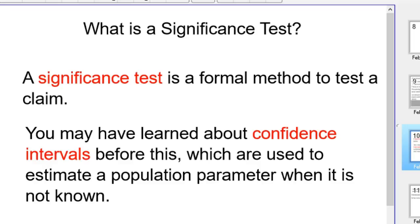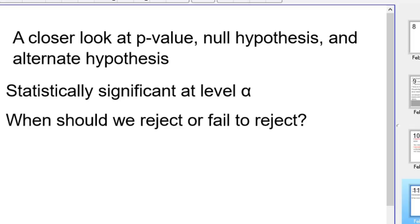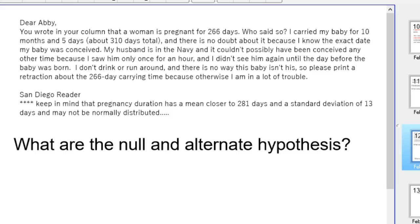We're going to take a second look at a significance test. Significance tests are a formal method to test a claim. We're going to take a closer look at p-value, null hypothesis, alternative hypothesis, and really look at statistical significance and an alpha level. The best way to explore this is with a situation.